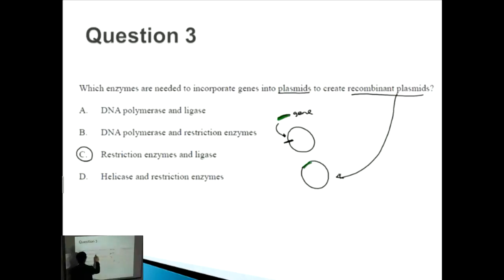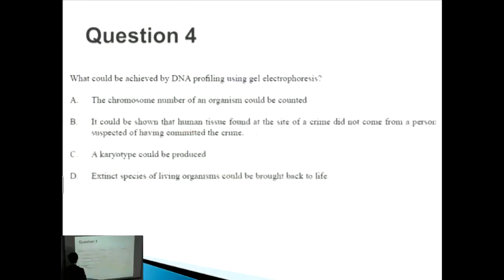A, B, and D are incorrect. Ligase in A is correct, but DNA polymerase is involved in DNA replication which copies the code during mitosis, not involved in genetic engineering or recombining plasmids. B has DNA polymerase, which is incorrect. D has helicase and restriction enzymes - helicase is involved in DNA replication and unwinds the helix. So the answer is C.